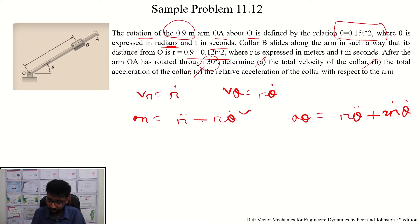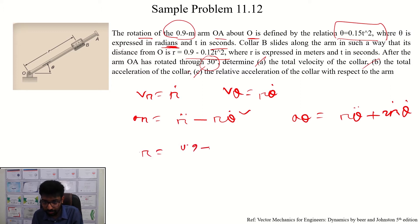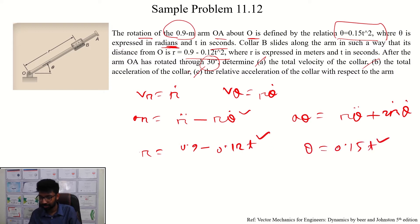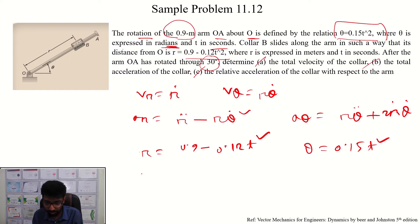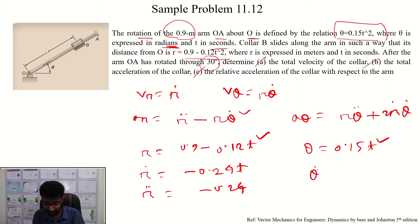The R equation is R equals 0.9 minus 0.12t squared. R-dot equals minus 0.24t, and R-double-dot equals minus 0.24. For theta: theta equals 0.15t squared, theta-dot equals 0.3t, and theta-double-dot equals 0.3.